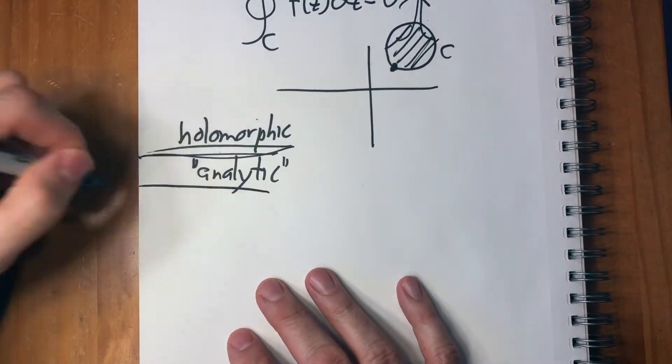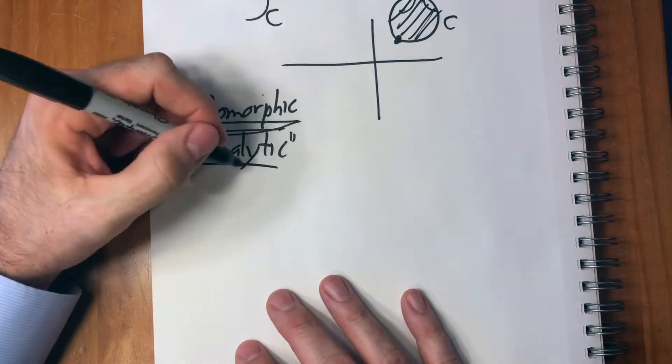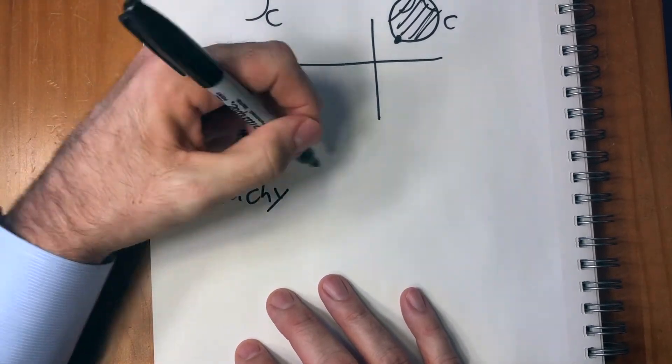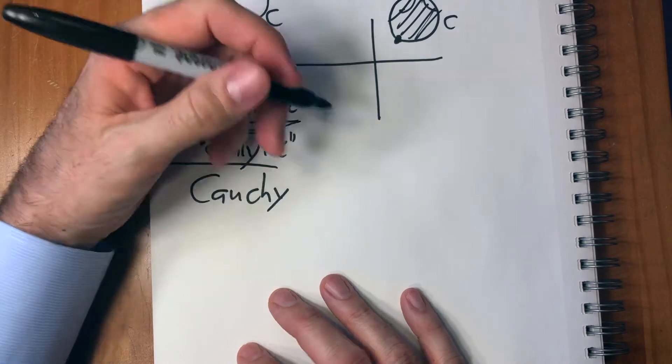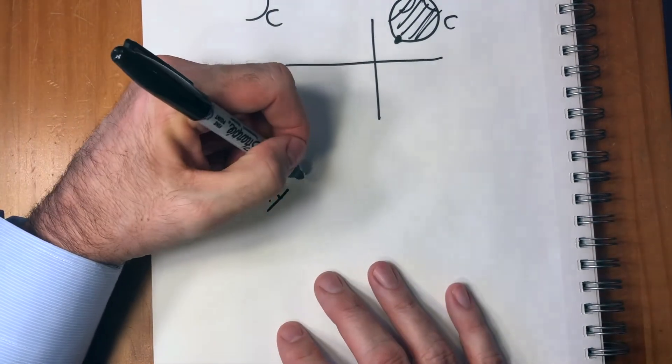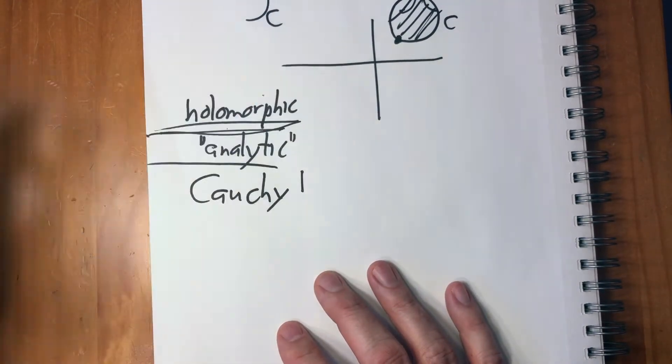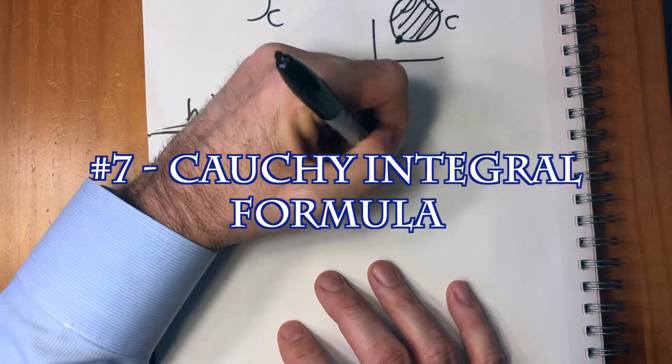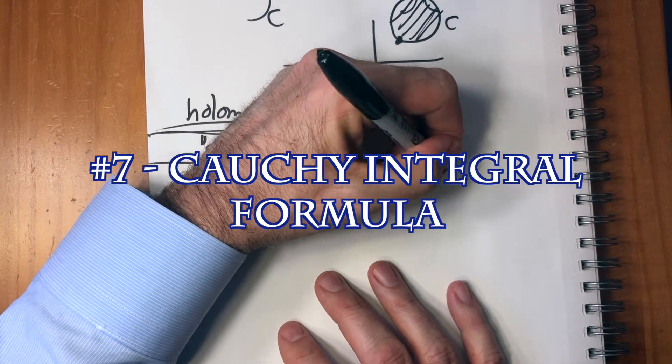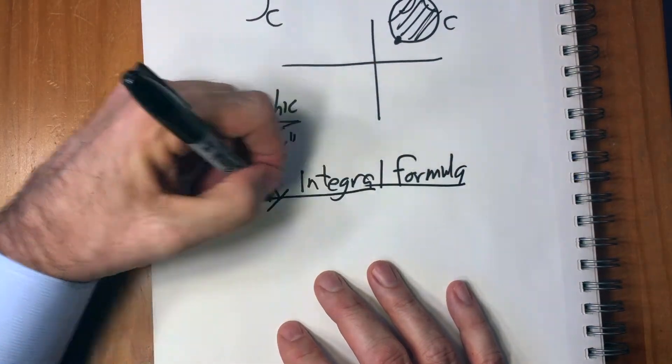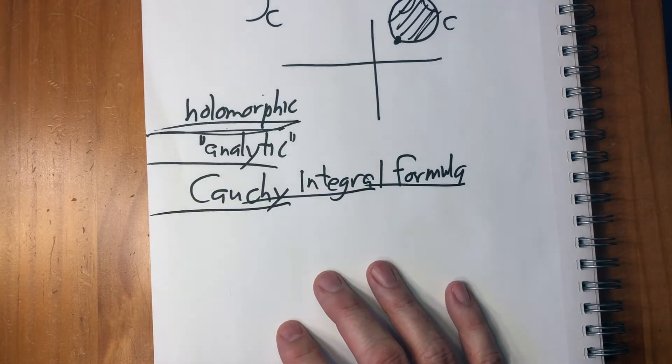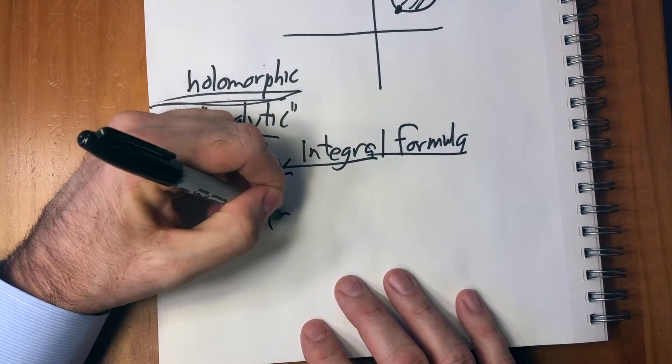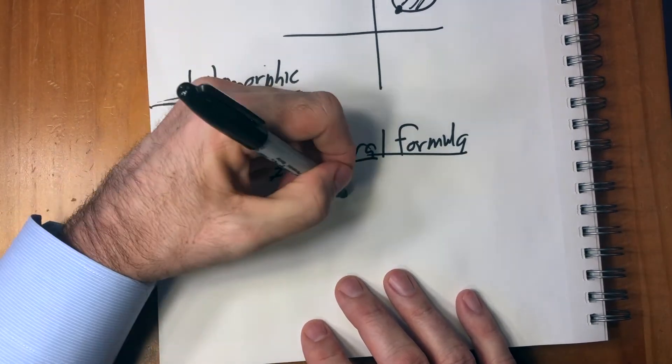So using this then, this now is one of the most amazing things in complex analysis and really in all of calculus, is the Cauchy integral formula. And this says, let me write it down first and then I'll tell you what it is.